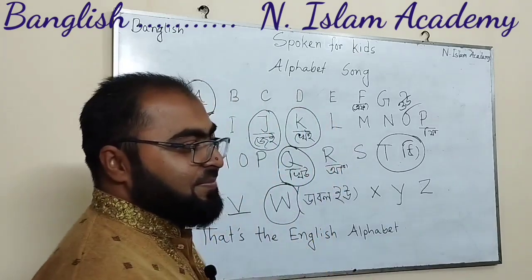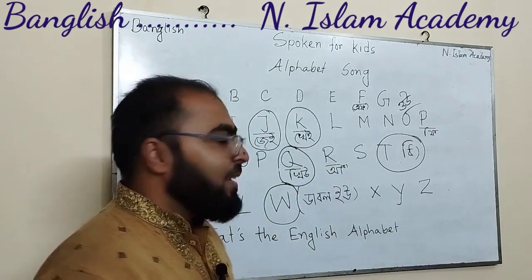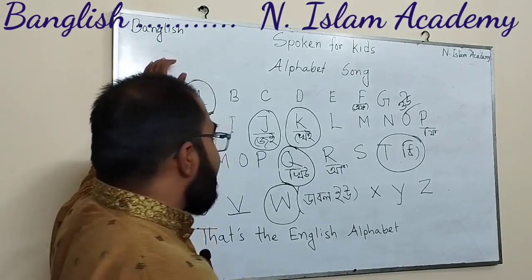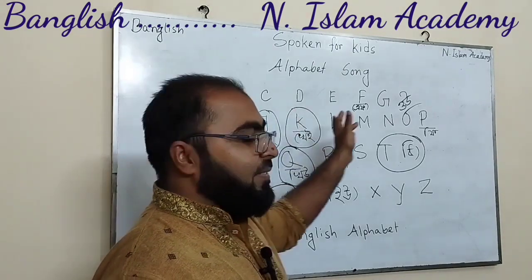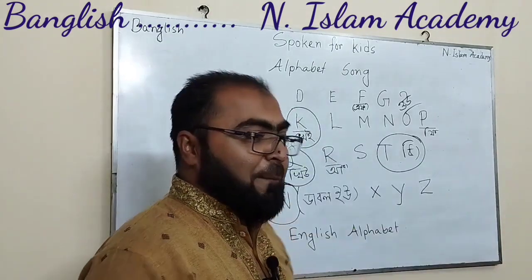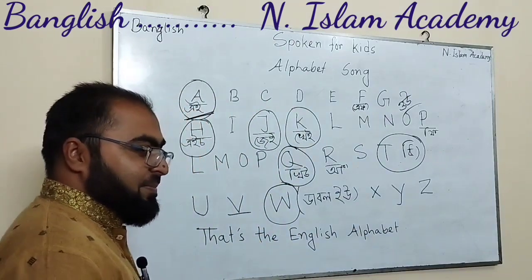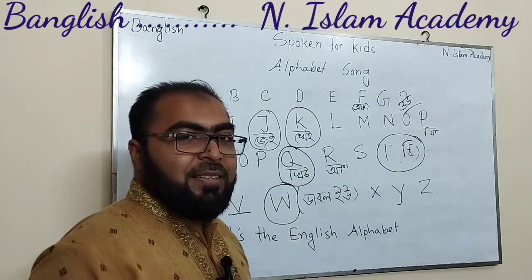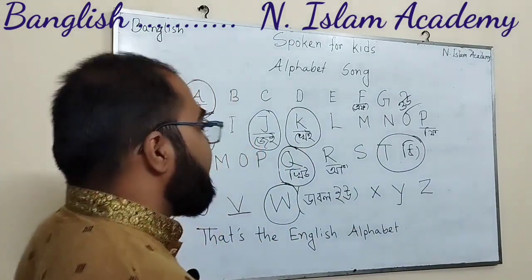That's the English alphabet. Again: A, B, C, D, E, F, G. A, B, C, D, E, F, G.